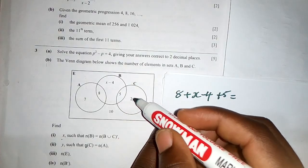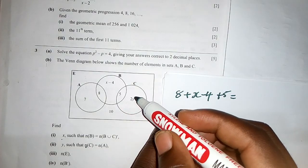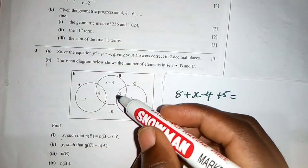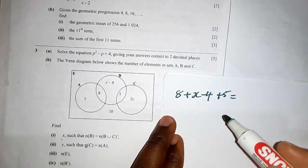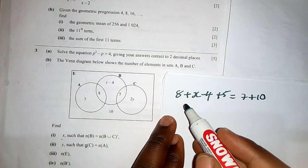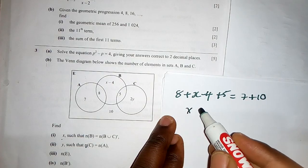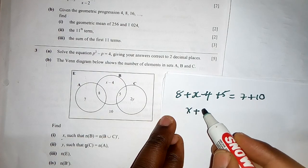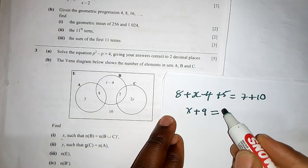So B and C, whatever you're able to see in B and C, get what will remain when you remove what is in B and C. So we have 7 and plus 10 there. So when we add here, we have x plus 9 is equal to 17.